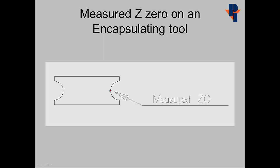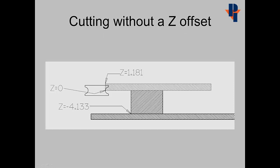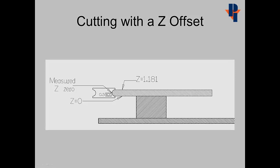On the encapsulating tool, the measured Z zero becomes at the middle of the opening. If we cut without a Z offset, the Z zero will ride at the Z zero on the stone. If we use a Z offset with a value of half the material thickness, or 0.591, the center of the tool will ride on the center of the material.